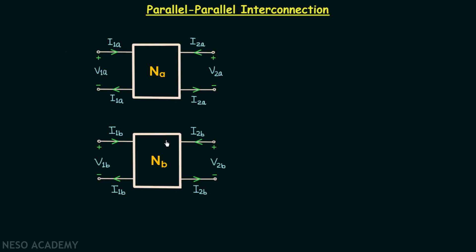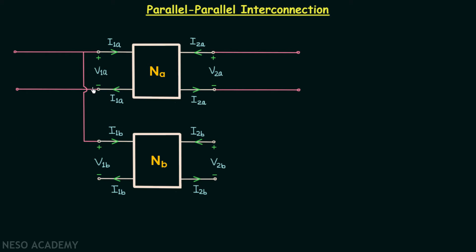Like the previous lecture, I have taken network NA and network NB. In order to have the parallel-parallel interconnection of NA and NB, I will extend all four terminals of network NA. We join the first terminal of the input port of NA to the first terminal of the input port of NB, and the second terminal of the input port of NA to the second terminal of the input port of NB. Then we join the first terminal of the output port of NA to the first terminal of the output port of NB, and finally connect the second terminal of the output port of NA to the second terminal of the output port of NB.